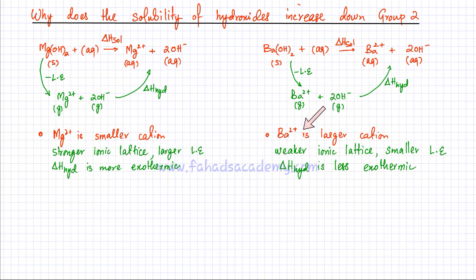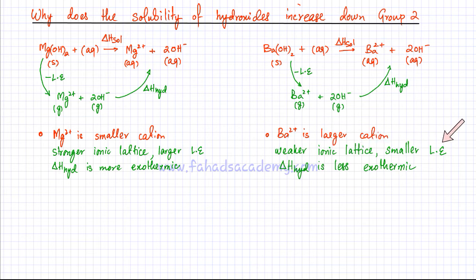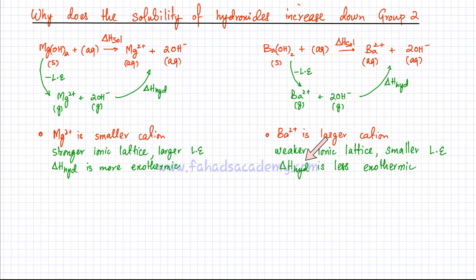Barium, on the other hand, is a larger cation. For larger cations, the distance between ions in the ionic lattice is much bigger, so a weaker ionic lattice is formed. The forces of attraction are much weaker, giving a smaller lattice enthalpy — it's much easier to break the lattice of barium hydroxide. And when that lattice is broken, the enthalpy of hydration — the bonds formed with water molecules — are also going to be weaker because it's a larger cation, so enthalpy of hydration is also less exothermic.